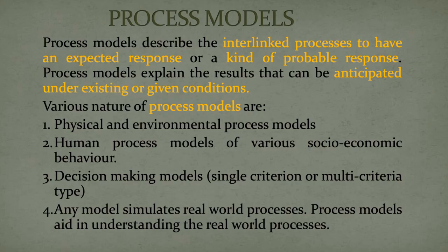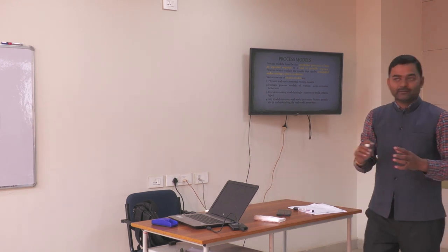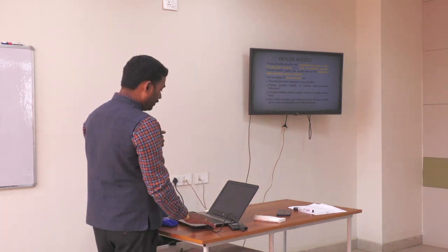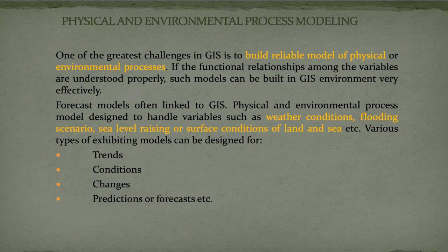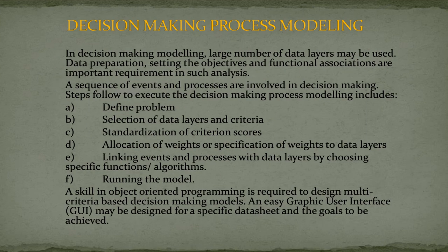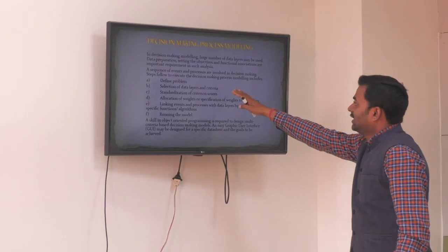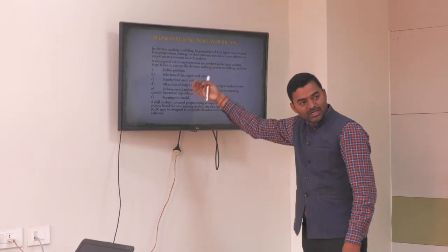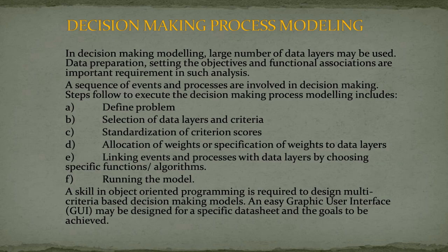If you look at physical environmental process models, there are four different types, but we don't use all of them. The third one — the decision-making model — is very important and is used by planners to make decisions. Under these four process models in spatial tools, the decision-making processing model is very important because it covers many things: defining the problem, selection of data layers and criteria, weightages, standardization, allocation of weightages, linking events, and running the model.